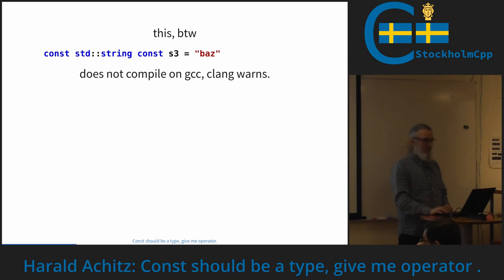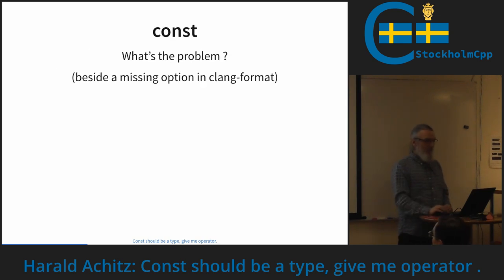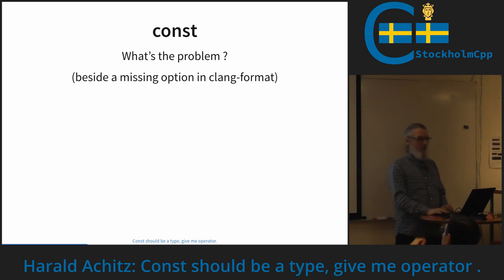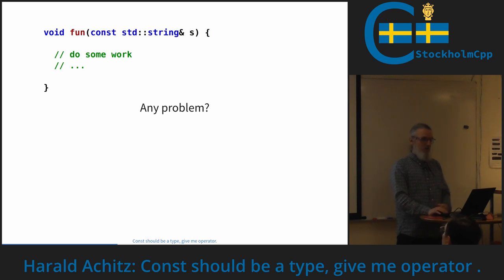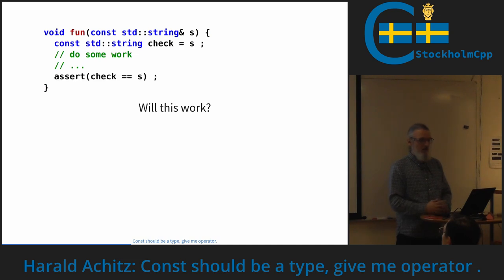But we cannot write it just like this — if we want to go for sure, this is not possible. But what is the problem besides the missing clang-format for const? Let's look at the usage of const — maybe someone can already spot the problem here. We can also write it like this, but this is not the problem. But maybe we already see a problem here — will this work?